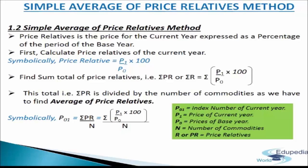This can also be written as P01 = Sigma PR / N, where P01 is the index number of the current year, P1 is the price of the current year, P0 is the price of the base year, N is the number of commodities, and R or PR is the price relative. We will understand this method with an illustration in the coming slide.